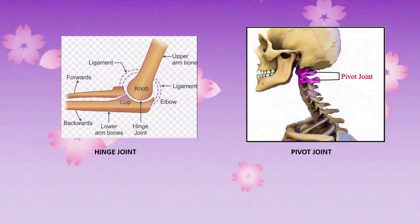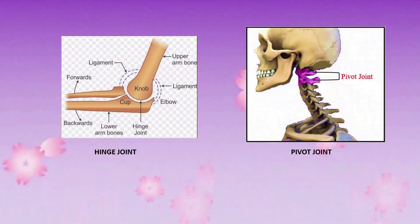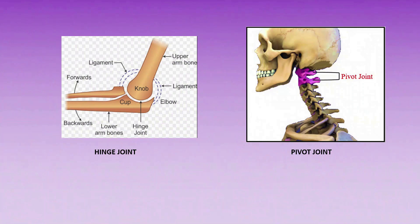This diagram shows the hinge joint between the humerus and radius-ulna, and the pivot joint between atlas and axis.